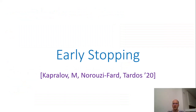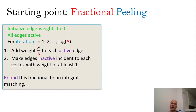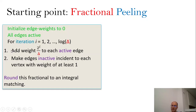We are now moving to the third technique, which we call early stopping. The starting point of this approach is the fractional peeling algorithm. This version of peeling first constructs a fractional matching and then rounds this fractional solution to an integral one. Let us now go step by step over fractional peeling. There are two lines that don't exist in the version of peeling we saw before.